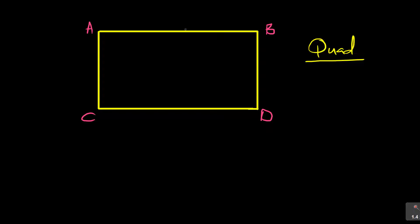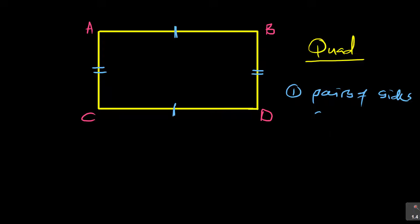And then being a quadrilateral, there are a few things you need to start already picking up. The first thing is sides. So let's say this quadrilateral is A, B, C, and D. The first thing you are picking up is that side AB is equal to side CD. So this pair of sides, they are equal. That's the first part. And the second part, the opposite pairs again, AC and BD, they are also equal. So number one, we are looking at the pairs of sides — the pairs of sides are equal.